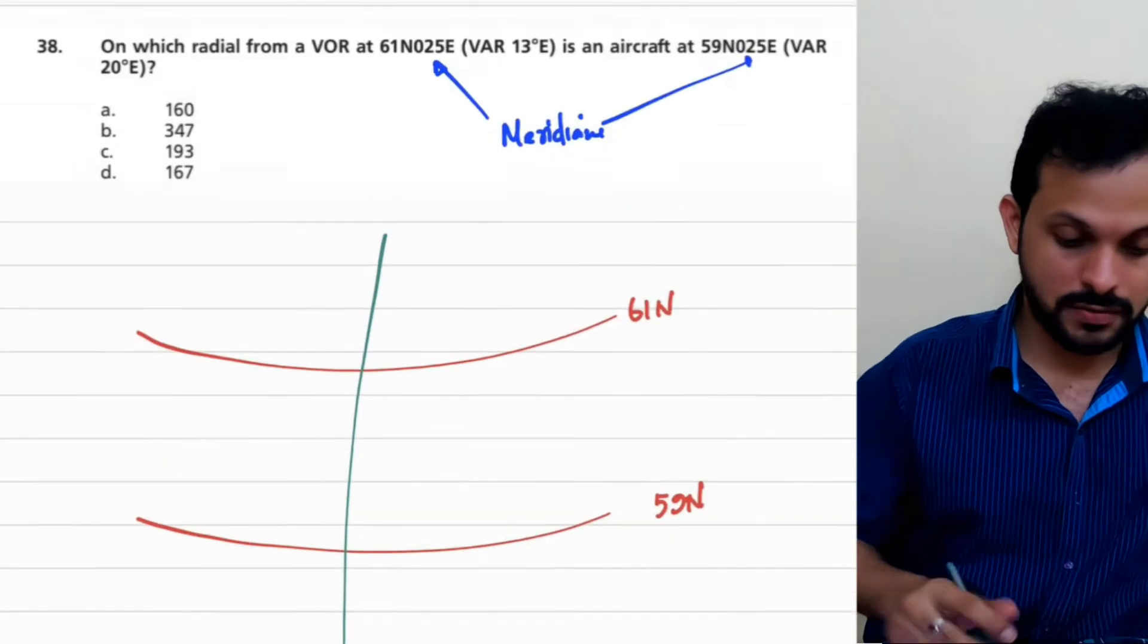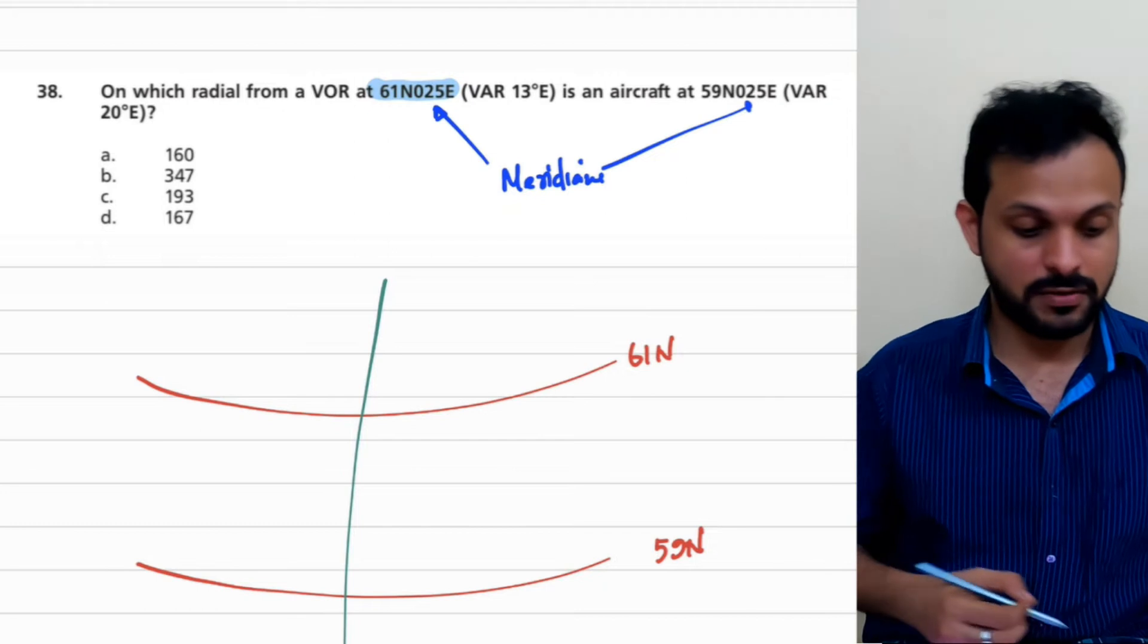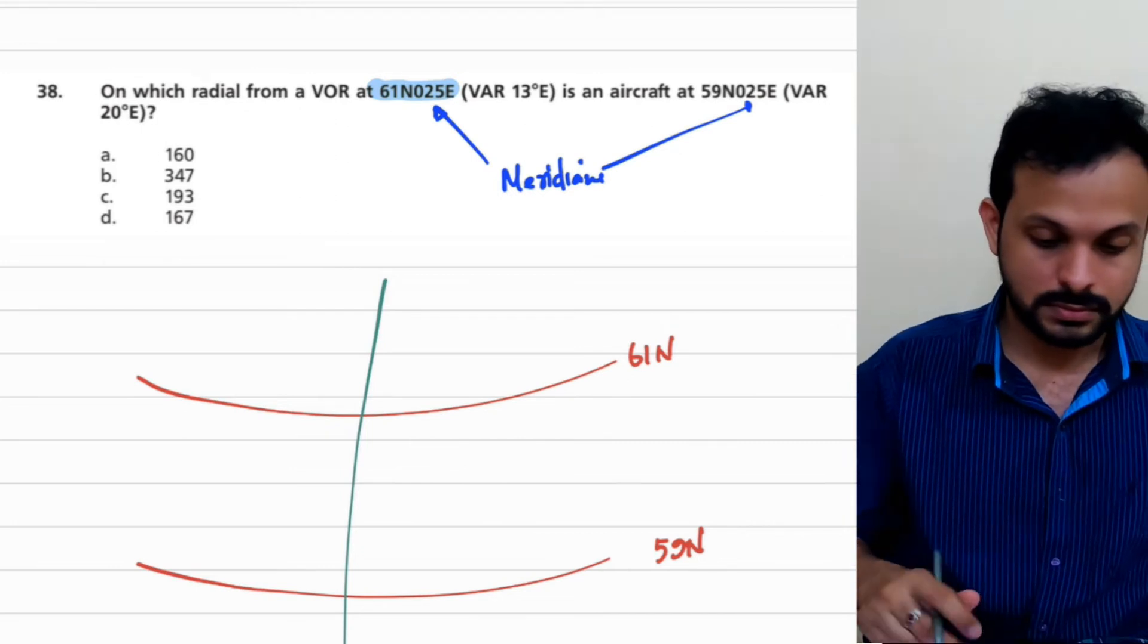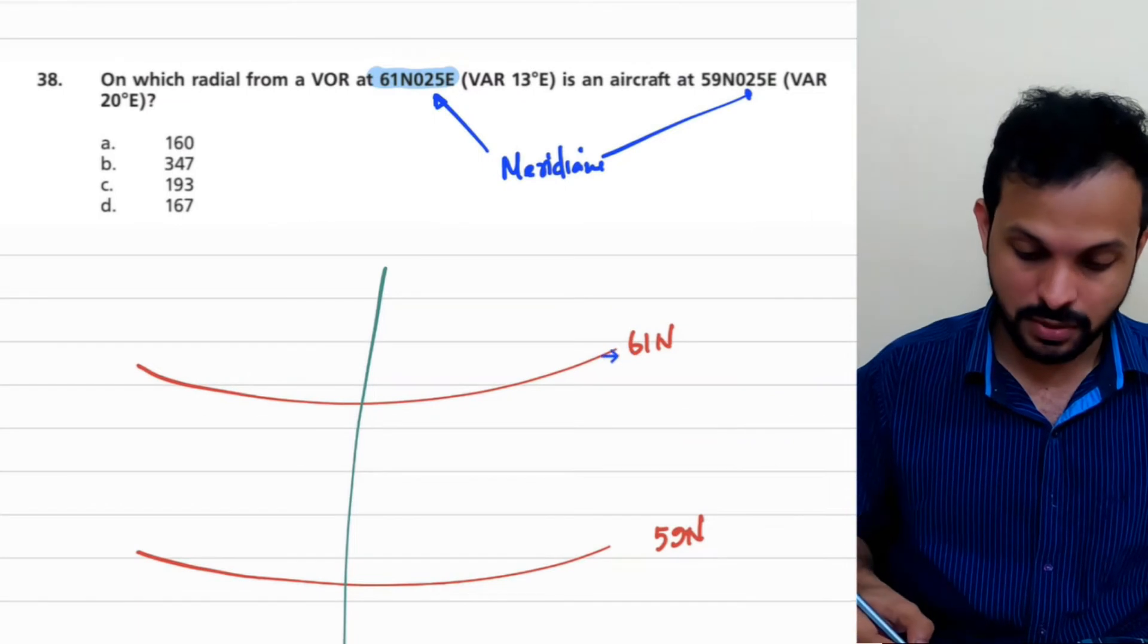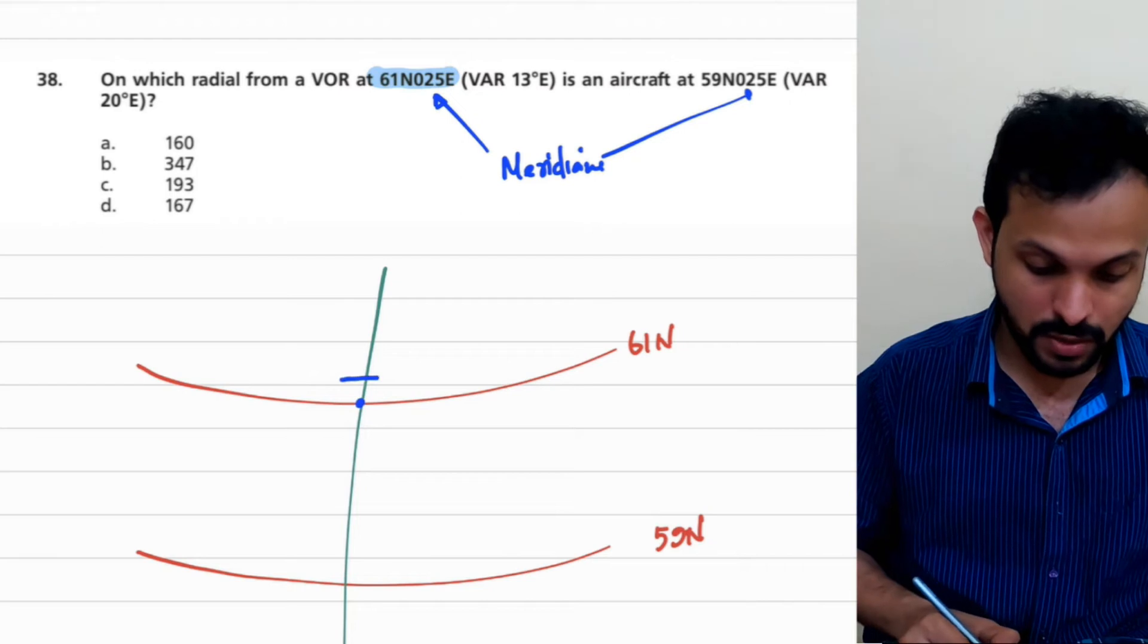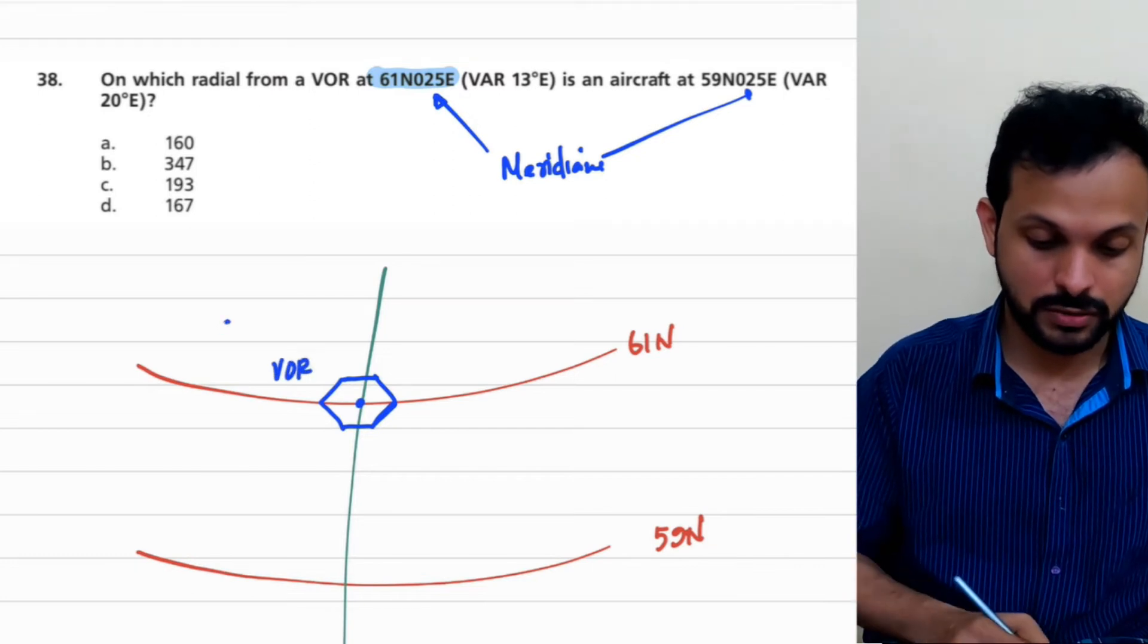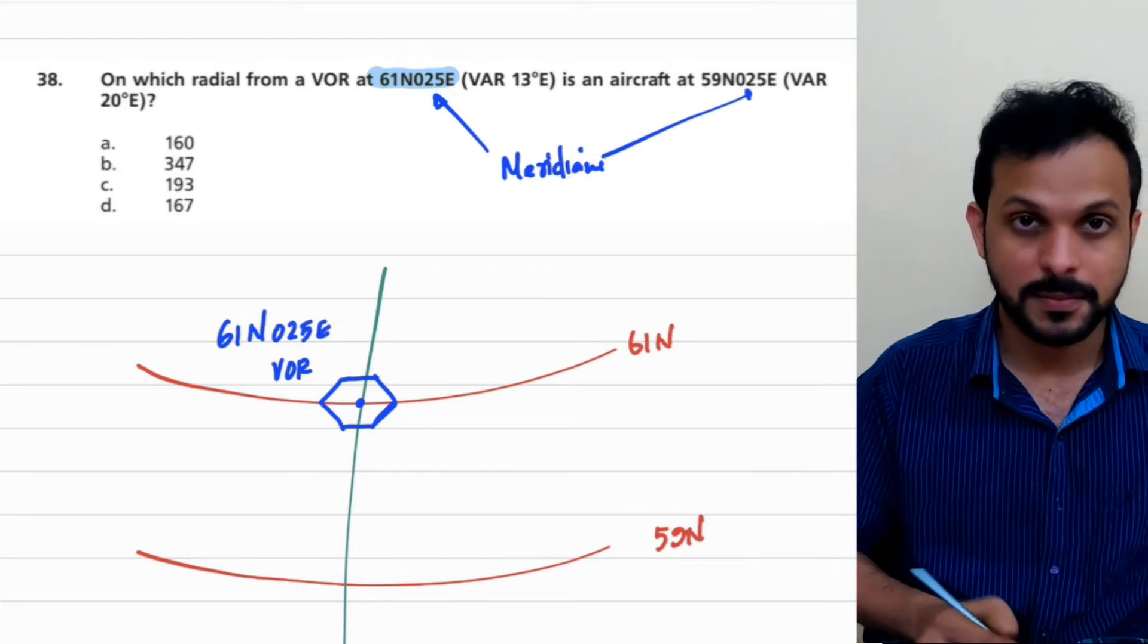Let's locate the VOR first. VOR is on 25 to 61 north and 25 east. Be very careful when you mark the position to not go all the way around, and that goes for your initial chapters of general navigation as well. So 61 north 25 east is basically over here, 61 north and 25 east is the intersection right here where we have the VOR. So this is the VOR. The location is 61 north 25 east.